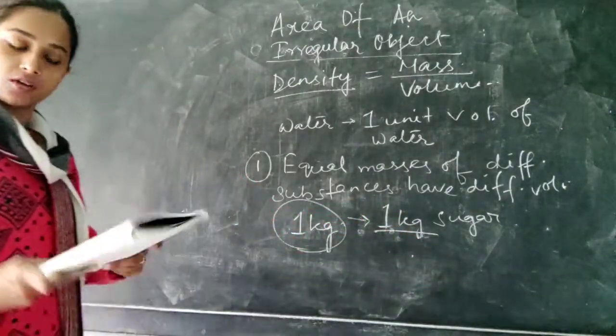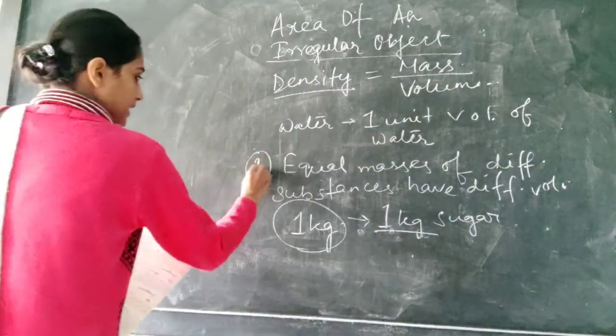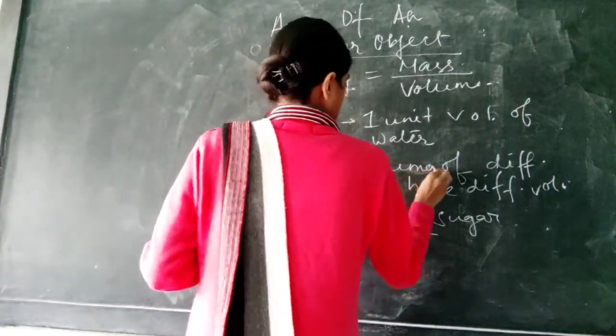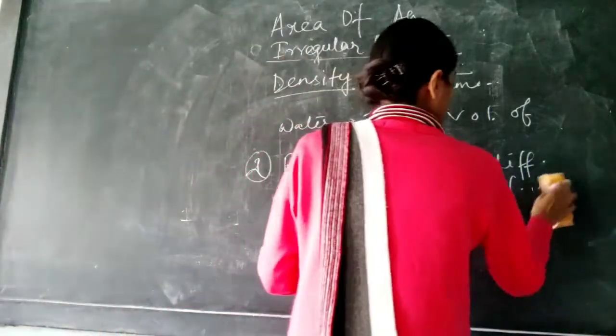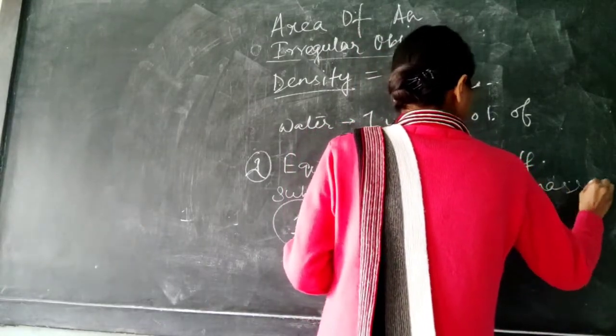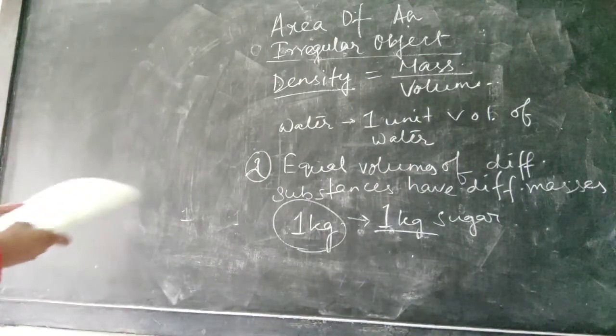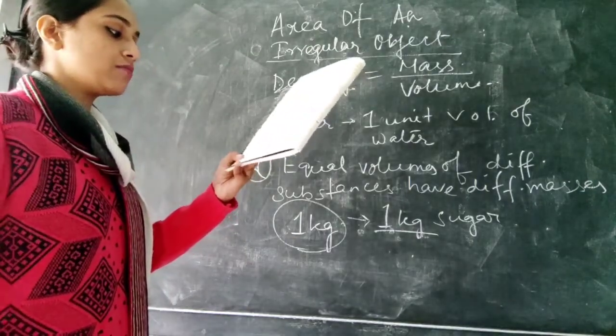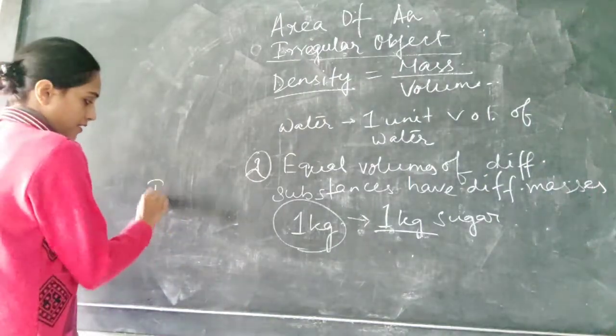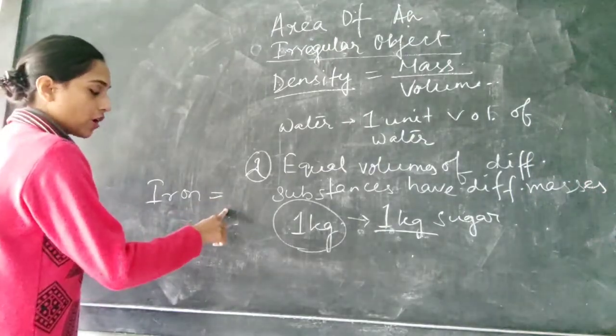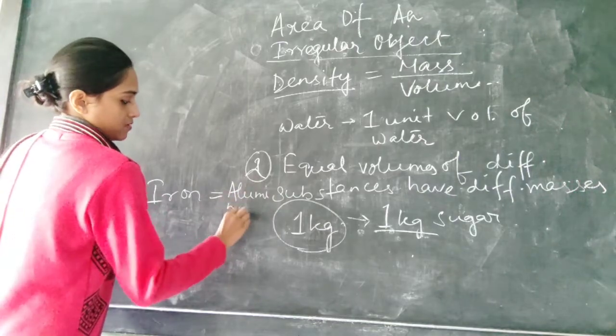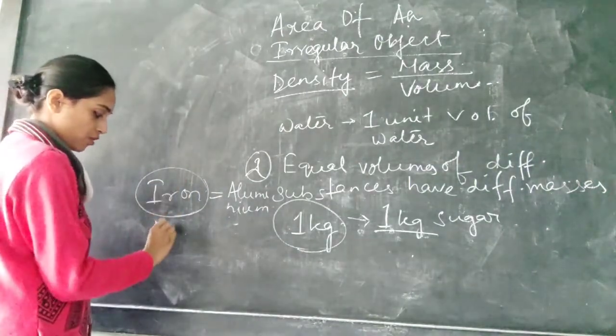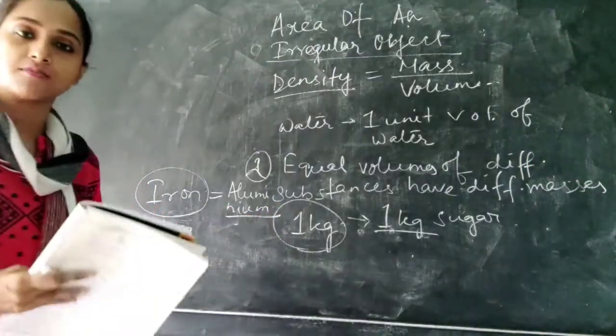Now coming to the next thing, that is equal volumes of different substances have different masses. That means here volume is same but the mass will be different. How can we measure this? Iron cube mass is more than the mass of aluminum cube. So suppose iron having same volume, iron having equal volume to aluminum. But iron having a particular volume will have more mass than this aluminum. It is having lesser mass.